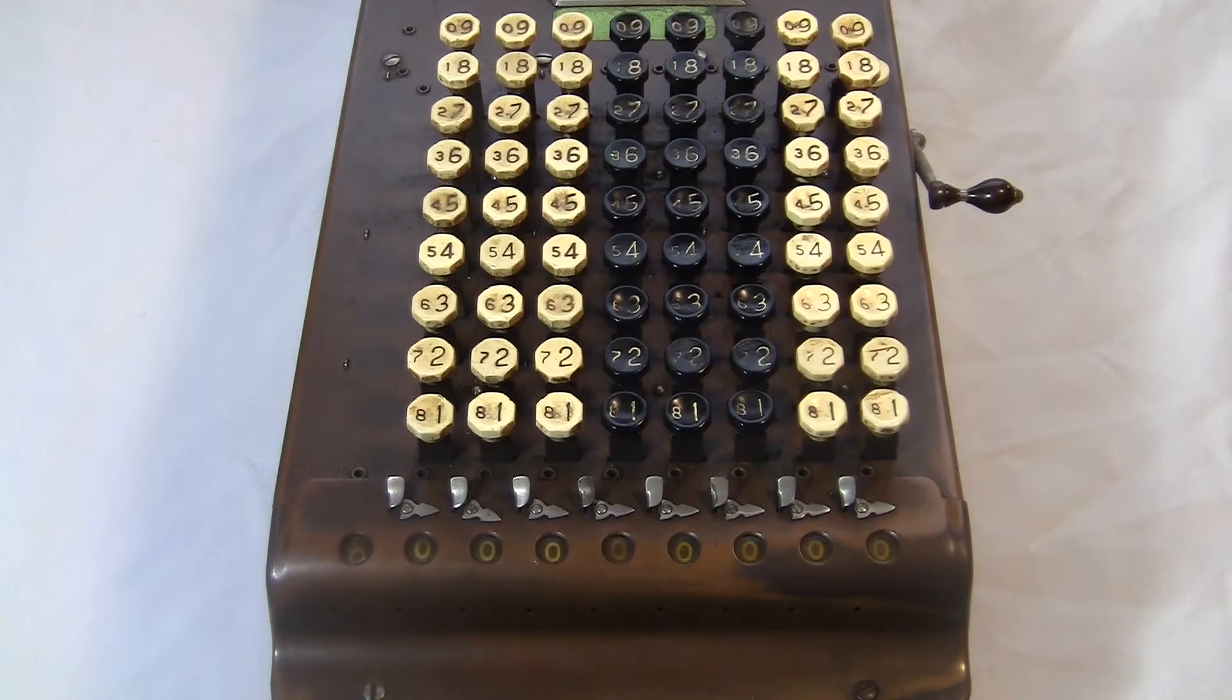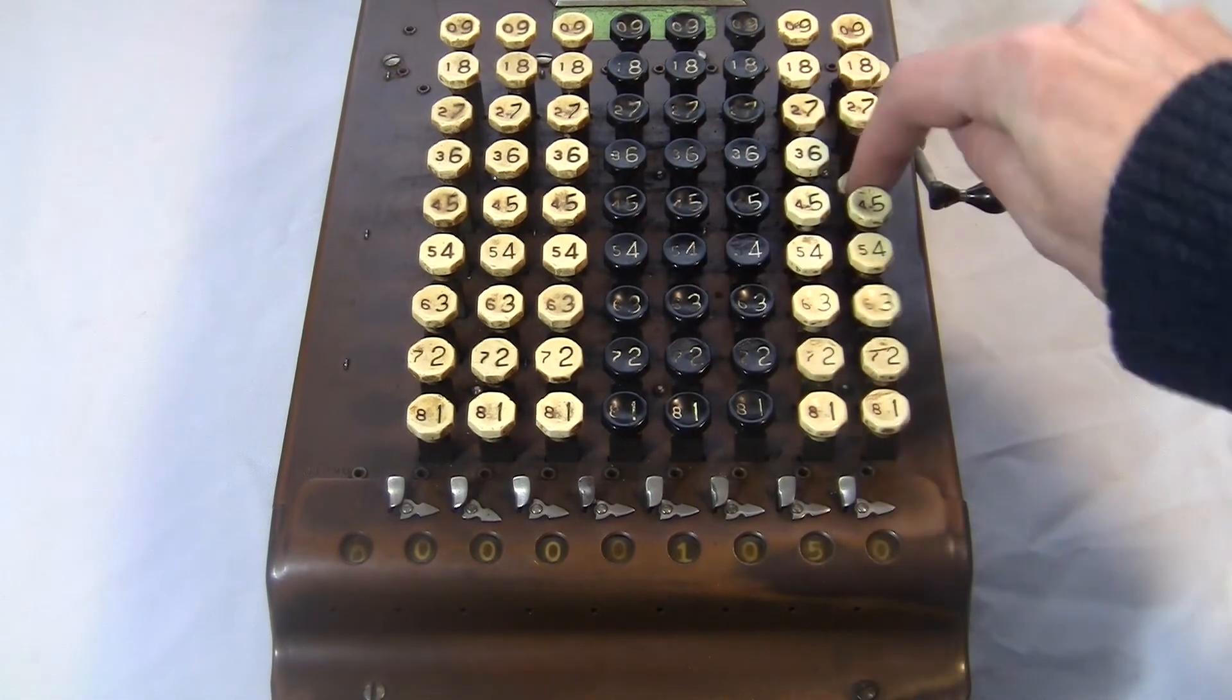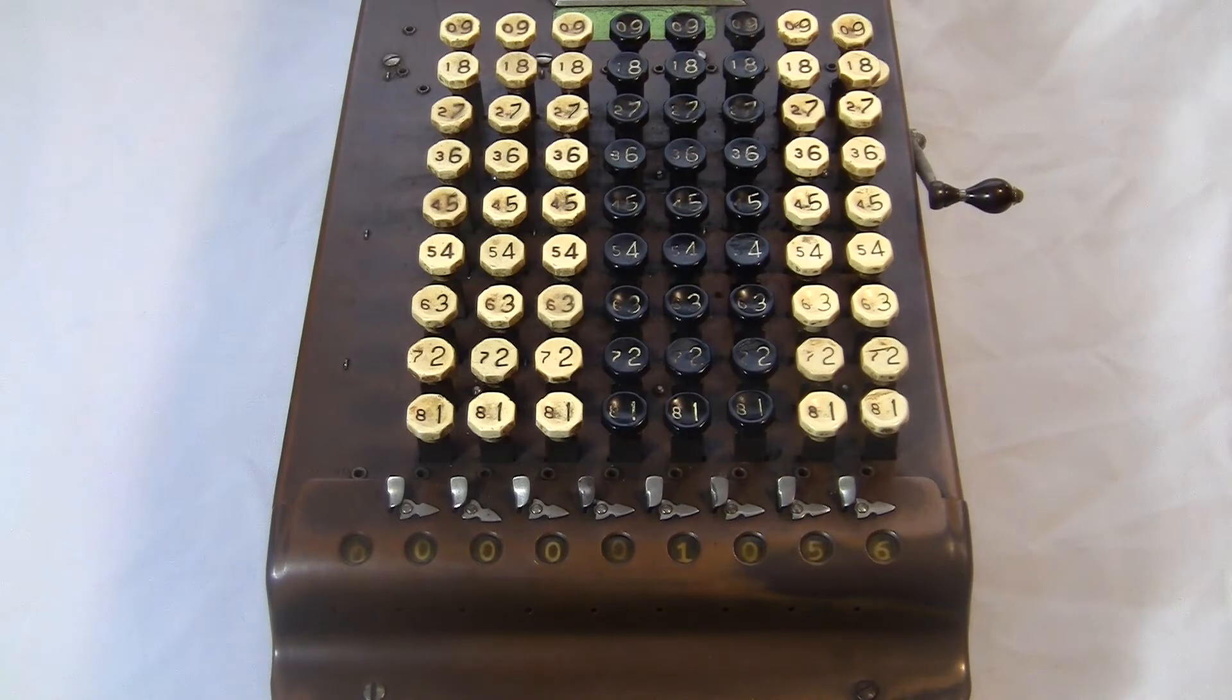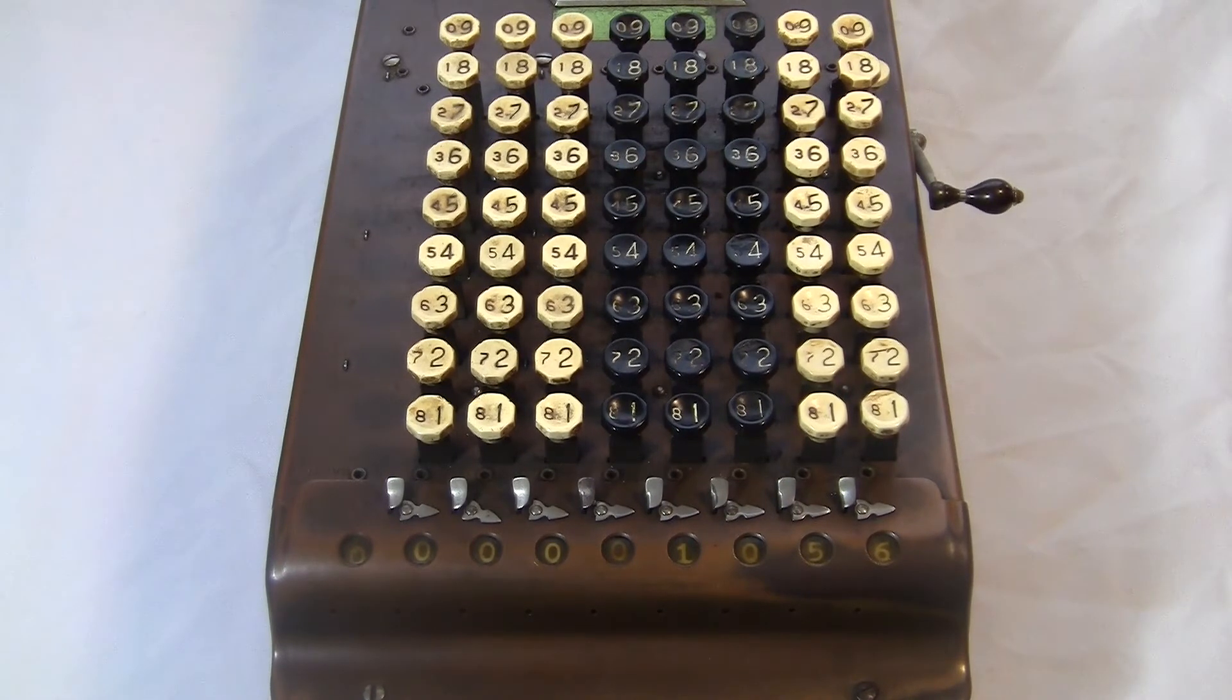So to do 500 minus 444, I enter 500 first on the big numbers, and then I do co-digits for 443. The answer is 56. Now I got an extra one here which carried over when I did the co-digits. This always happens when you subtract, but these extra carries are actually built into the division procedure.